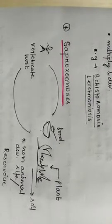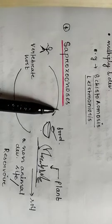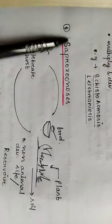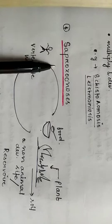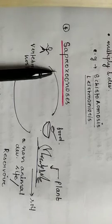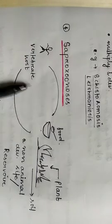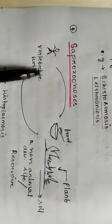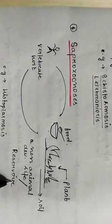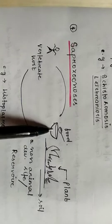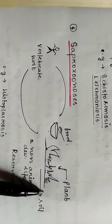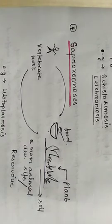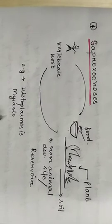The next type of zoonosis is saprozoonosis. As the name indicates, sapro is the involvement of a non-living development site or reservoir. In the saprozoonosis, the disease transmission involves the vertebrate host and a non-animal development site or reservoir. And this reservoir can be food, plant, or soil. And from these, the parasite can be transmitted. The example of saprozoonosis is histoplasmosis and myasis.